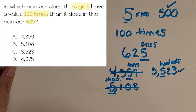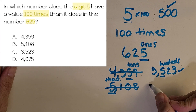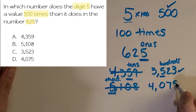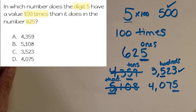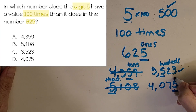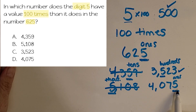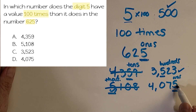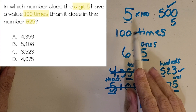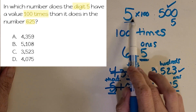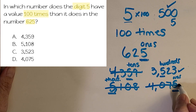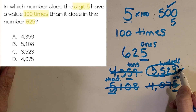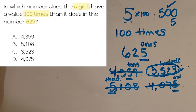But let's double-check choice D just to make sure we didn't make a mistake — that can happen, and it's always good to check all the choices. D is 4,075. What place is that 5 in? The ones also — so that one looks the same as 625. How much is a 5 in the ones place worth? Just 5. And that would not be 100 times — it's the same. So we can't choose that one. We go with C. Great job working it out!